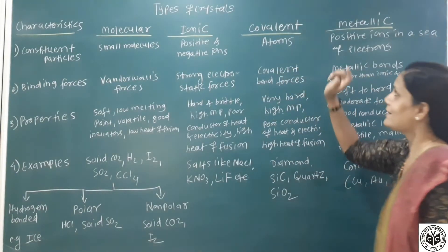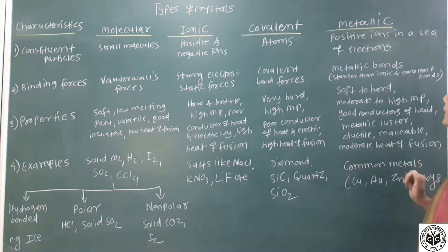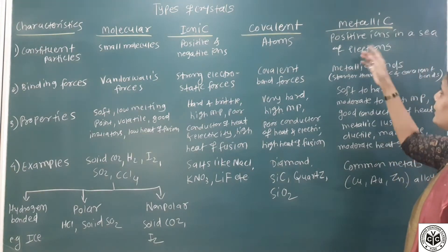In covalent solids, atoms are there as a constituent particle, and in metallic solids, positive ions, cations in a sea of electrons are present.